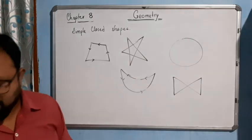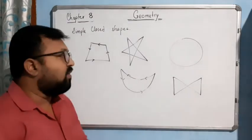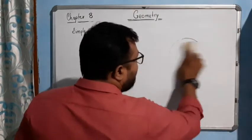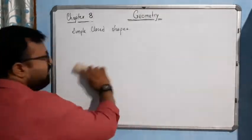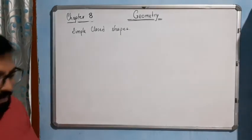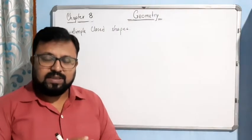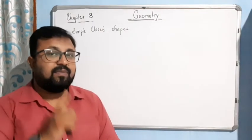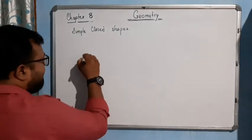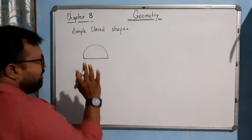Now in your book, the next topic is polygon. What is polygon? You have to see the figure very carefully. A polygon is a simple closed figure made up of line segments. For example, if I draw like this, this is a simple closed figure.